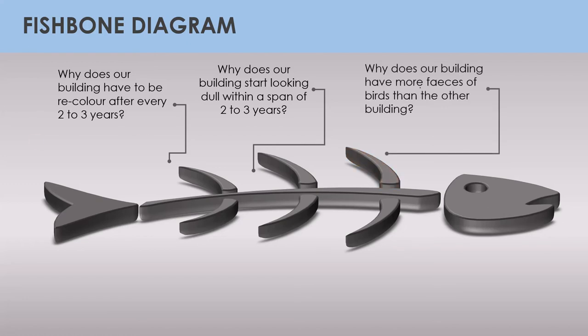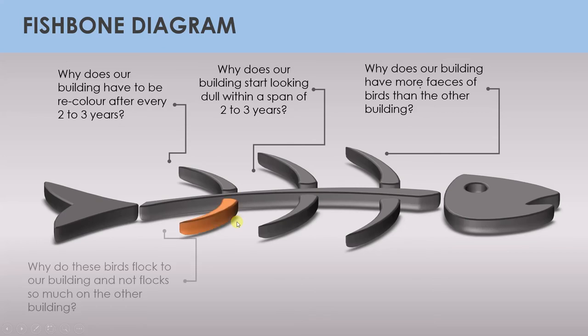Why does our building have more feces of birds than the other building? Someone answered: because they flock together in our building compared to the other building. The administrator's fourth question: why do these birds flock to our building and not so much to the other building? The answer: because these birds feed on the insects that appear on our building.